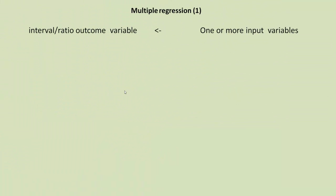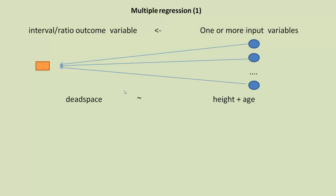So let's look at some example models. Following this general outline that we have one or more input variables of any type, but we always have the output variable, the dependent variable, as interval ratio type data. So the simplest example we've got is dead space, which is interval ratio data, tilde height plus age.